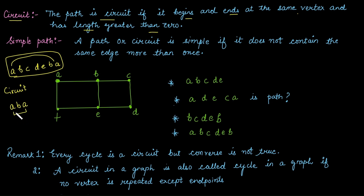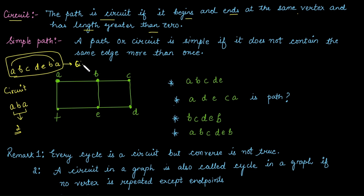Even a-b-a is a circuit because the endpoints are the same: we start from a, move to b, then go back to a. The length of this circuit is two. For the longer circuit a-b-c-d-e-b-a: a to b (1st), b to c (2nd), c to d (3rd), d to e (4th), e to b (5th), b to a (6th) — so it is a circuit of length six.